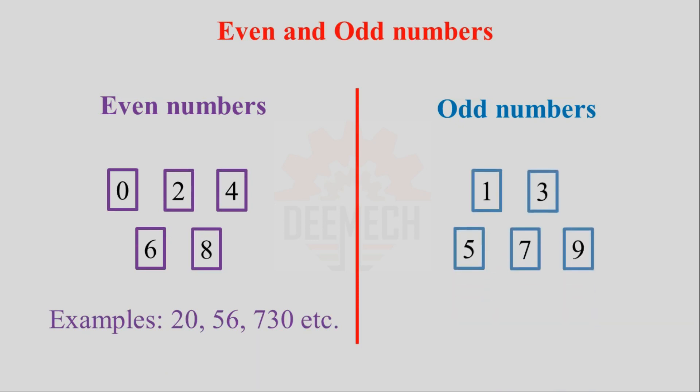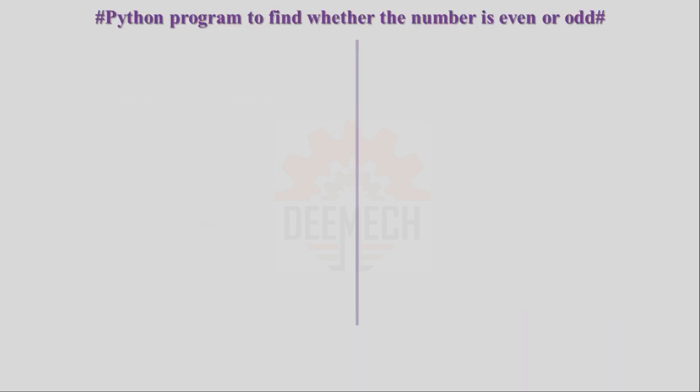Numbers like 1, 3, 5, 7, 9 — other examples 99, 83, 641 etc. — these numbers are called odd numbers.